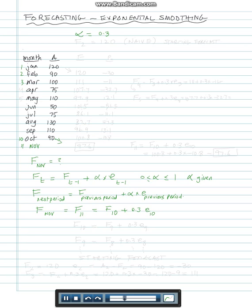To forecast November we need the forecast for October plus the error for October. But do we have the forecast for October or the error for October? No, we don't. If we want the forecast for October, that's the forecast for September plus 0.3 times the error for September. Do we have those? Again, the answer is no, we don't.